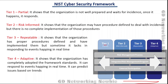Tier four is adaptive. This shows that the organization has completely adopted a framework standard and is now in a position to respond to events happening in real time. The organization can even predict issues based on trends, for example by having honeypots deployed. These are the different implementation tiers based on the maturity level of organizations, covering the three main components of the NIST Cybersecurity Framework.